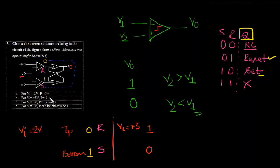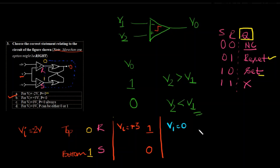But note — more than one option might be correct. So we should check the remaining cases. For VI equals 0: is 0 greater than plus 2? No — top comparator gives 0. Is minus 1 greater than 0? No — hence bottom comparator also gives 0. Both 0 and 0 means no change — Q might be 0 or might be 1 depending on the previous state.